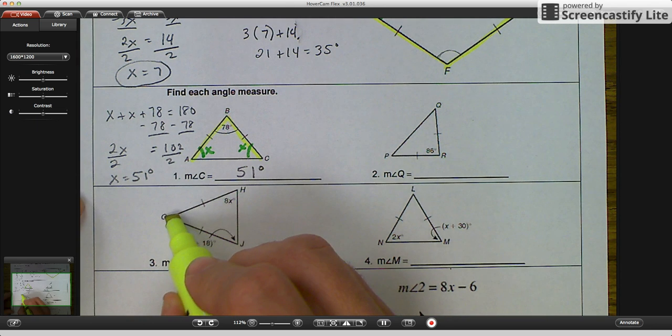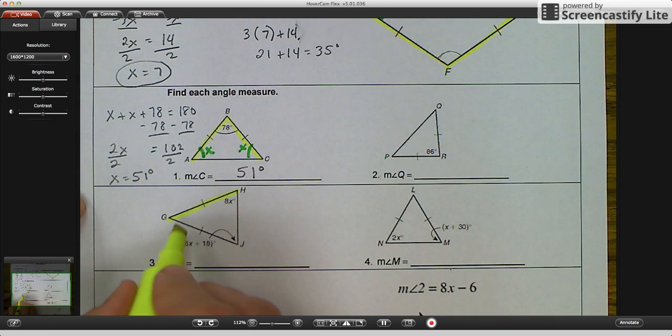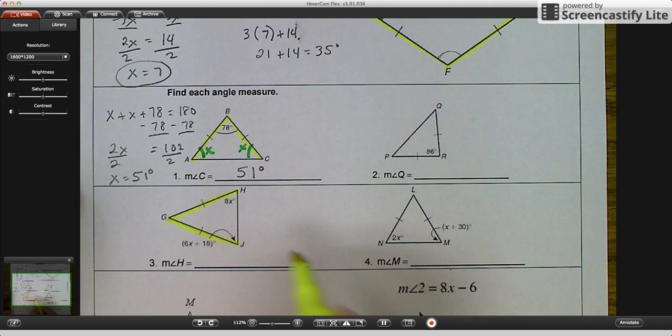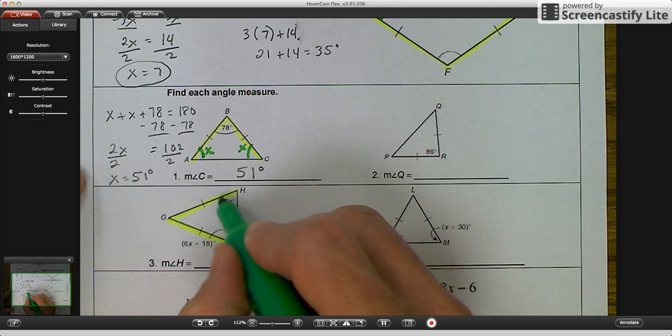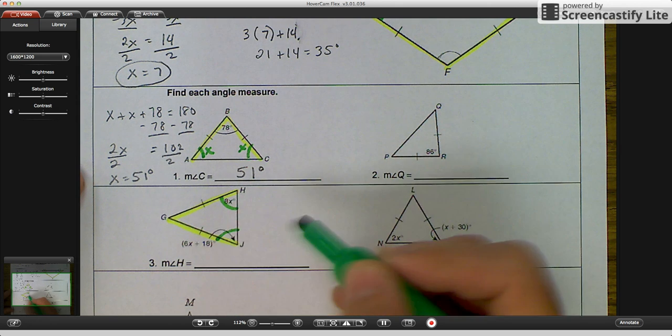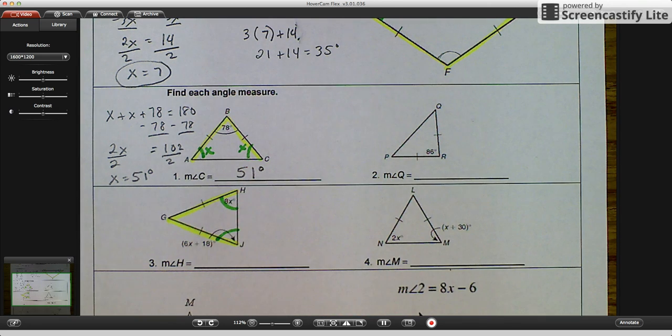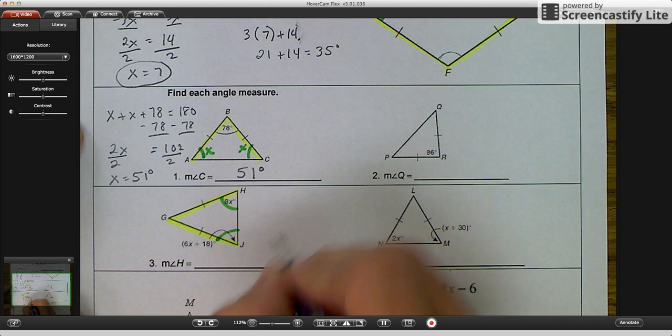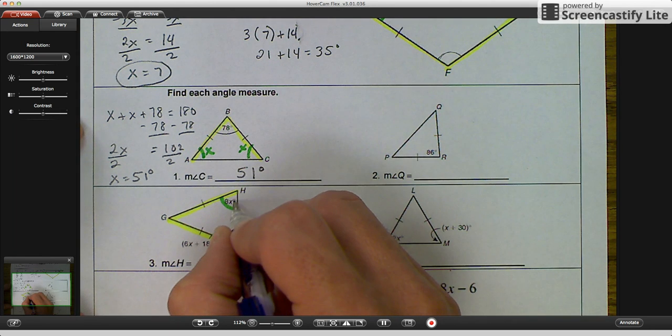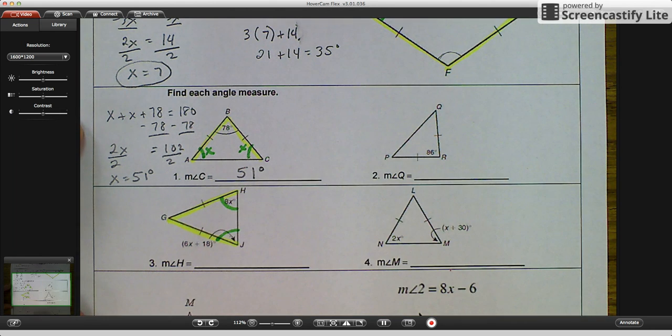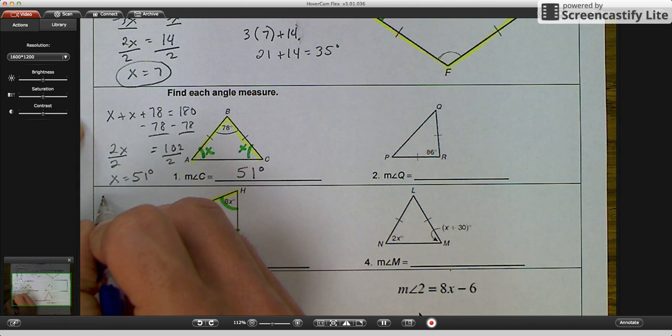The next one I'm going to look at is example three. And I always highlight my isosceles sides so that I can see better whether we're dealing with a base angle or not. So my base angles are right here and we are dealing with measurements of base angles.